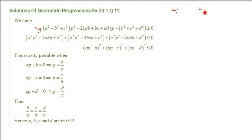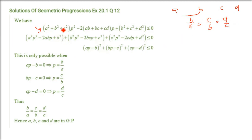If A, B, C, D are in GP, it means B/A = C/B = D/C. This is what we need to prove. We take one term from the first bracket, the second term from the second bracket, and the third term from the third bracket and combine them.